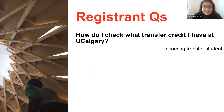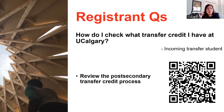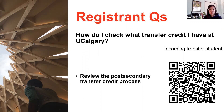I've also put the link in the chat. The next question is: how do I check what transfer credit I have at UCalgary? The QR code on the right will take you to a website about the whole post-secondary transfer credit process. Once everything is assessed by the admissions team, your transfer credit report will be on your Student Center. Follow the link — it will show you all the steps you need to take to check what transfer credits you'll have once you come to U of C.